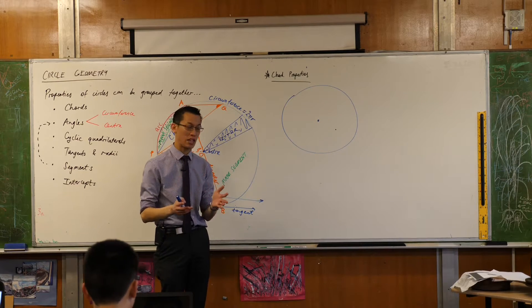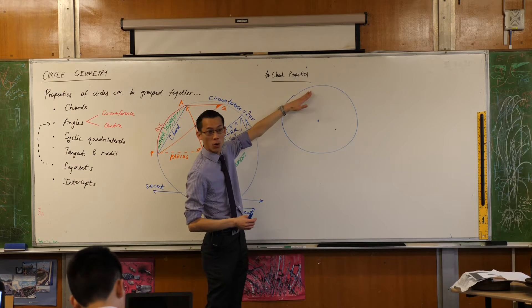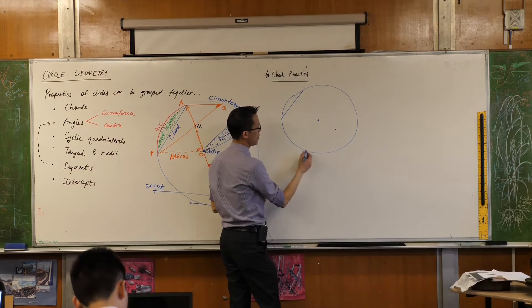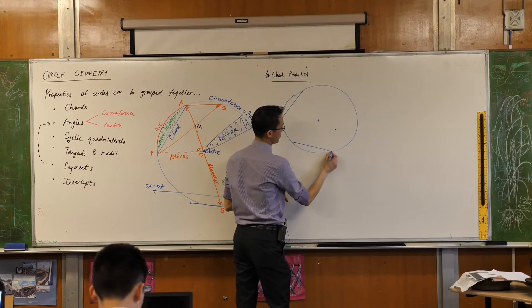Can you just make the chords the same length? Make the chords the same length. So maybe they're both going to be 2cm chords, but in different spots. Maybe something like over here and over here.